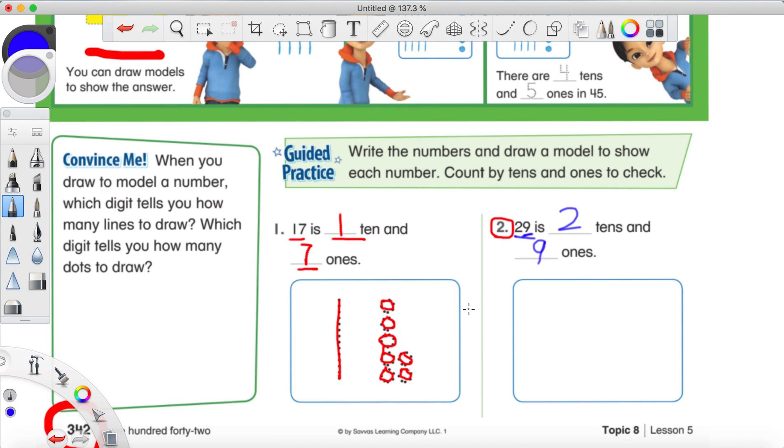Now, how can we draw this with our 10 stick and 1 circles? Well, how many 10 sticks do we need? Well, for that, to find that out, we just look at what number we have in the tens place, and it's 2. So, we draw 2 ten sticks. Next, we look at our ones to figure out how many circles we need to draw for our ones place. And we wrote the number 9. So, we draw 9 circles.